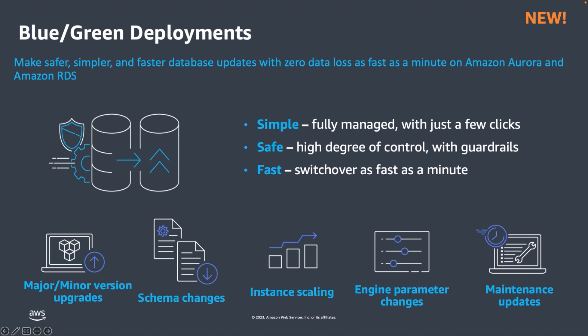The blue-green deployment allows you to perform a major or minor version upgrade, change database parameters, make schema changes, perform instant scaling, and perform maintenance updates in the staging or green environment without impacting your production or blue environment. This feature also provides switchover guardrails that help to ensure that database promotion happens safely. With just a few clicks in the RDS console, you can create a production-ready green environment, and once your green environment is ready for promotion, you can initiate a switchover with one additional click. Note that workloads with long-running transactions and large replica lags may take longer to switch over.